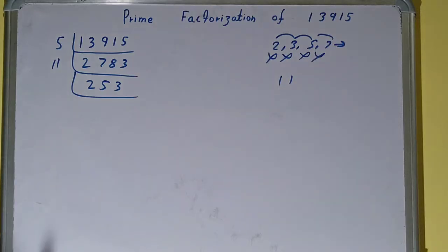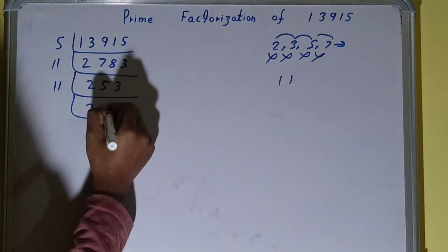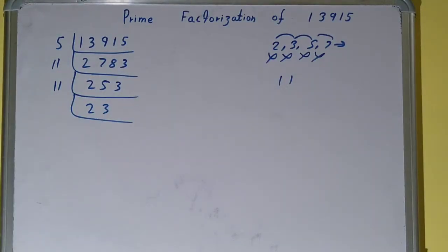So divide it. You will be getting 23. Now 23 is not divisible by 11 because 23 is itself prime.